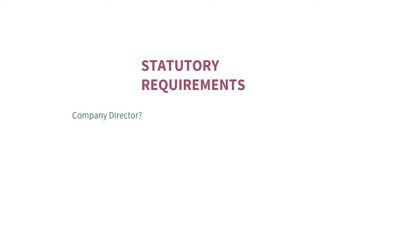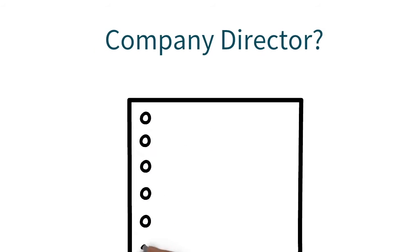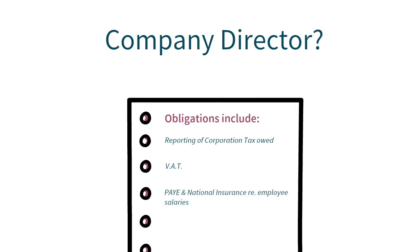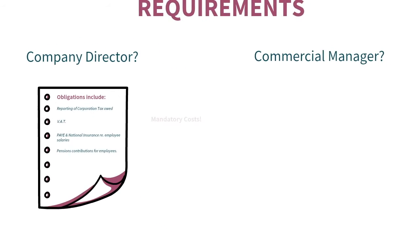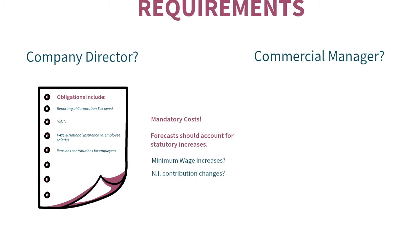The minimum statutory requirements you need to understand will differ depending on whether you are the business director or a key commercial manager within the business. Business directors have certain statutory obligations associated with financial statements, including reporting of corporation tax owed, VAT, PAYE and national insurance related to employee salaries, and pension contributions for employees. The associated payment of these costs is mandatory and must be carefully managed. These cash flows out of the business must be built into forecasts, including statutory increases such as minimum wage levels or national insurance contribution changes.